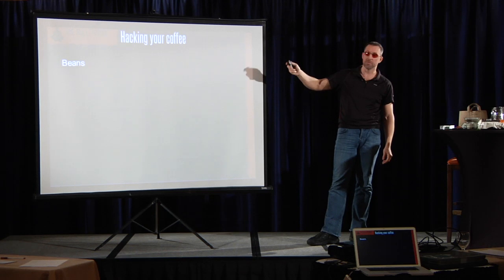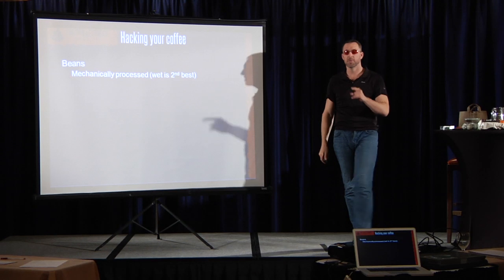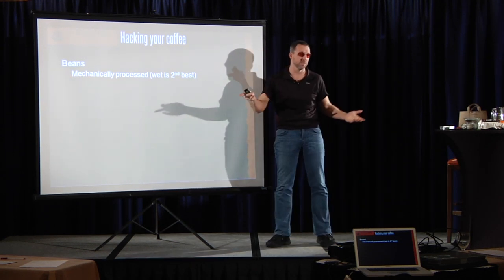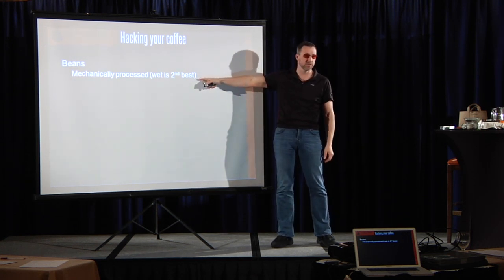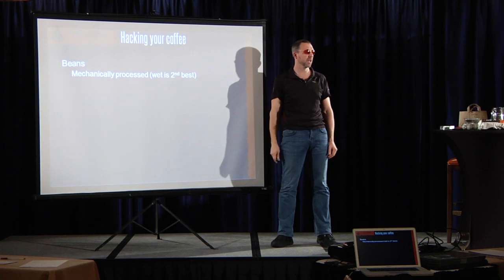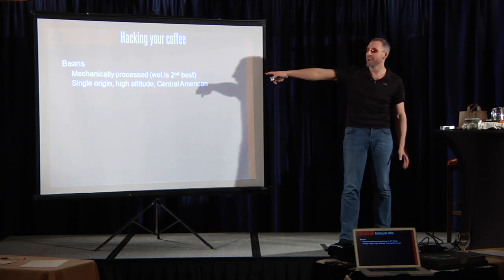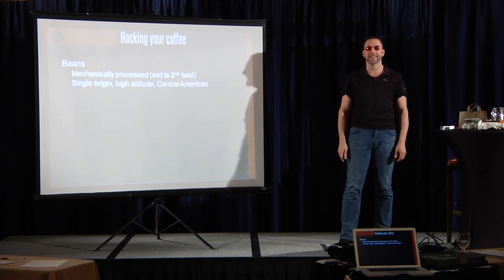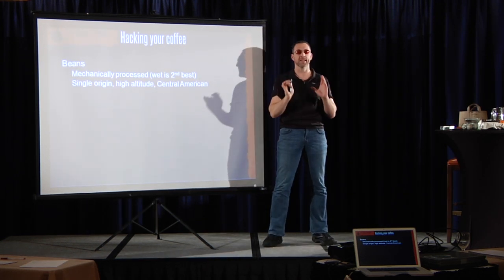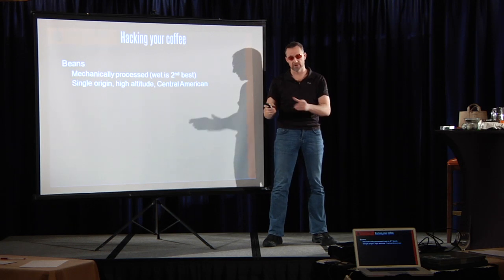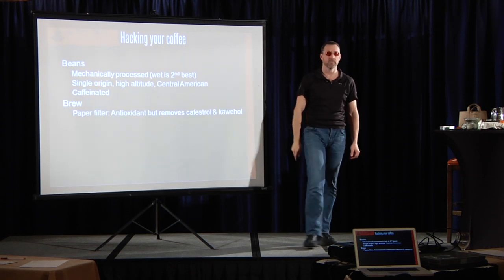How to prepare bulletproof coffee? Number one, beans. You want mechanically processed beans with a clean process like mine. Wet process is your second best choice. Single origin, high altitude, Central American. Central American beans have less insect infestation problem. You want caffeinated. When you brew it, you can use a paper filter. But you get these two important substances sucked out of there.